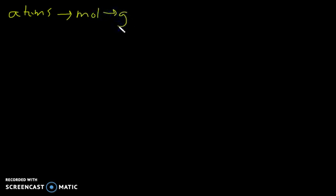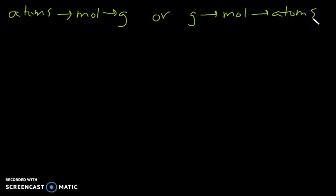In this video we're going to be doing multi-step conversions, which is where we're putting together our moles-to-atoms conversions and our grams-to-moles conversions into one single conversion. We're either going from atoms all the way to grams — to do that we've got to first go to moles and then go to grams, because we can't go straight from atoms to grams — or we start with grams, convert to moles, and then convert to atoms.